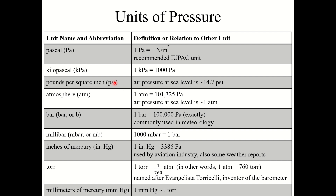PSI is the unit most commonly familiar in the United States — you often see this when filling up a basketball, volleyball, or on your tires. Air pressure at sea level is about 14.7 psi, pounds per square inch. The atmosphere is the most common unit, and one atmosphere equals 101,325 pascals.